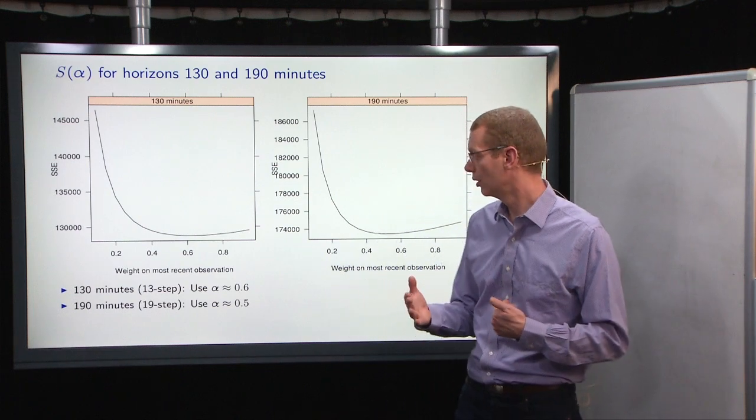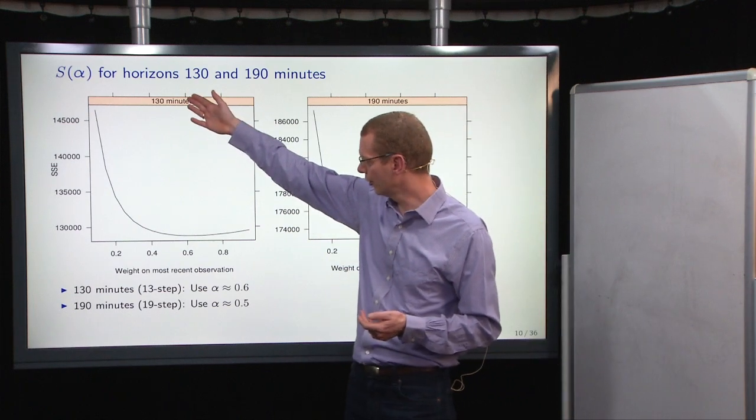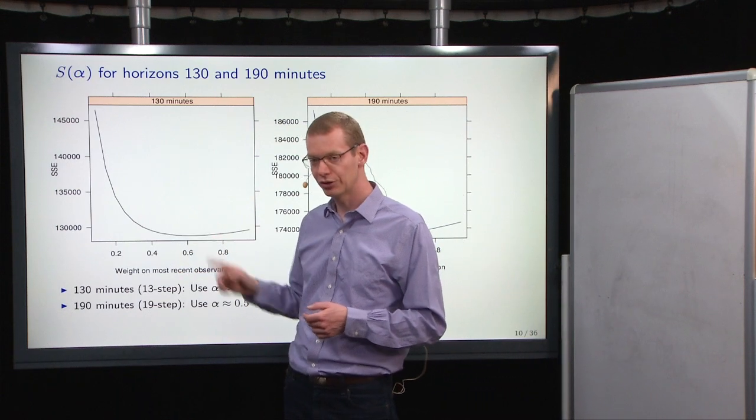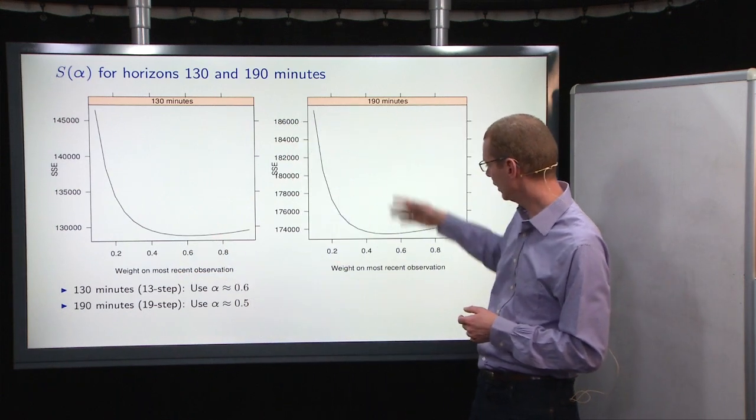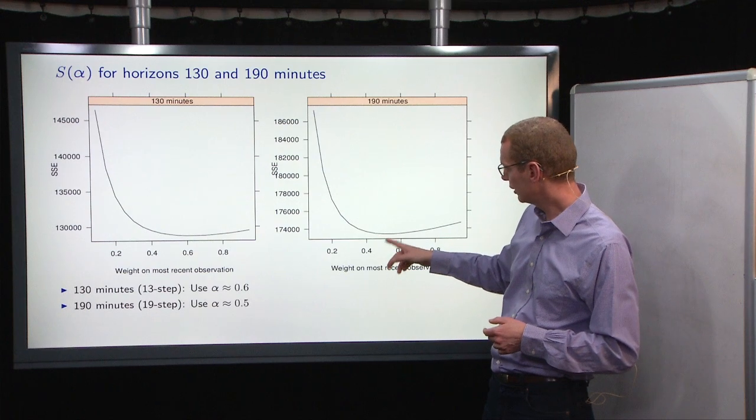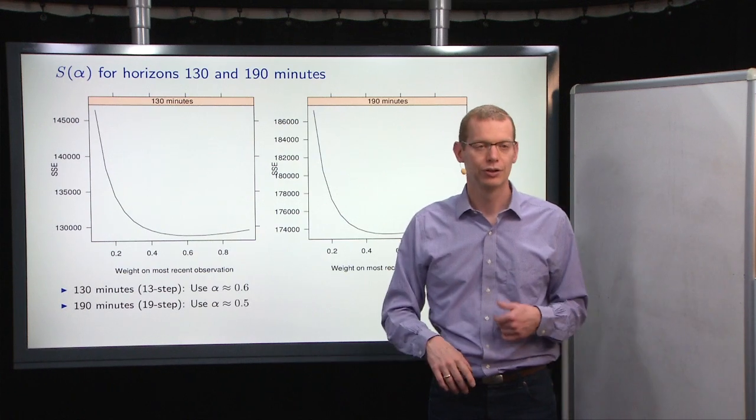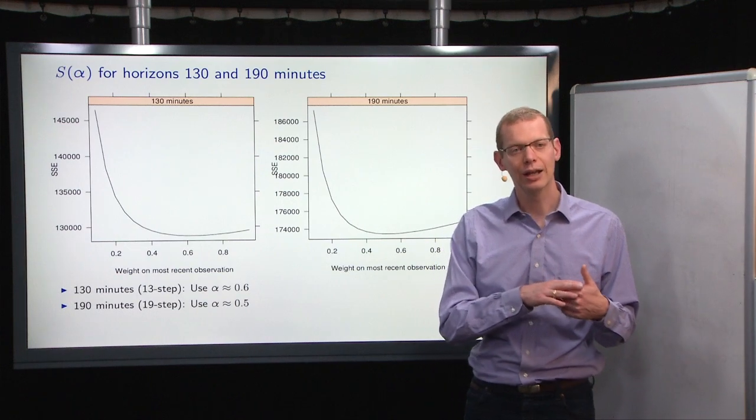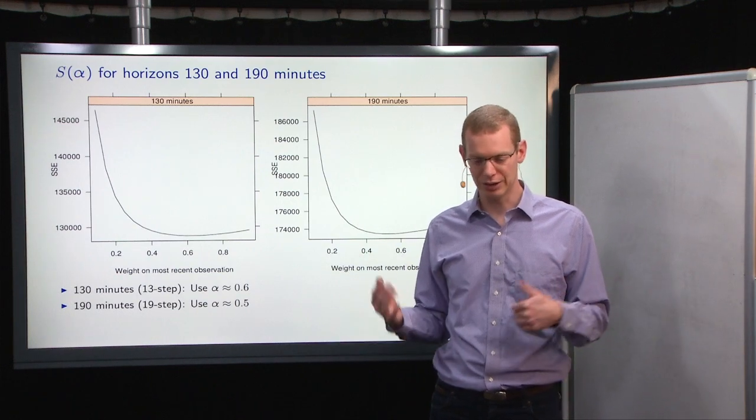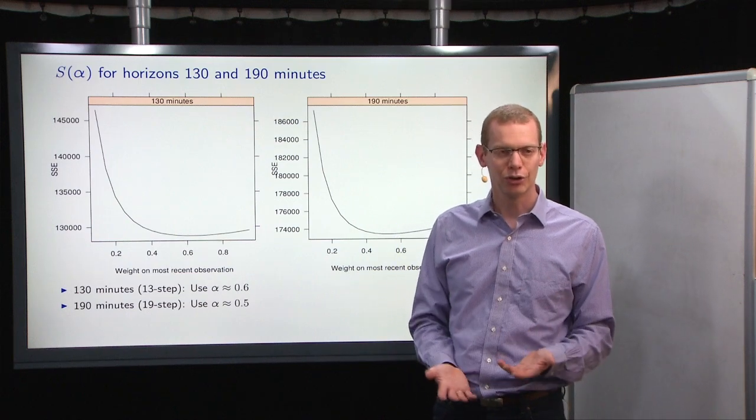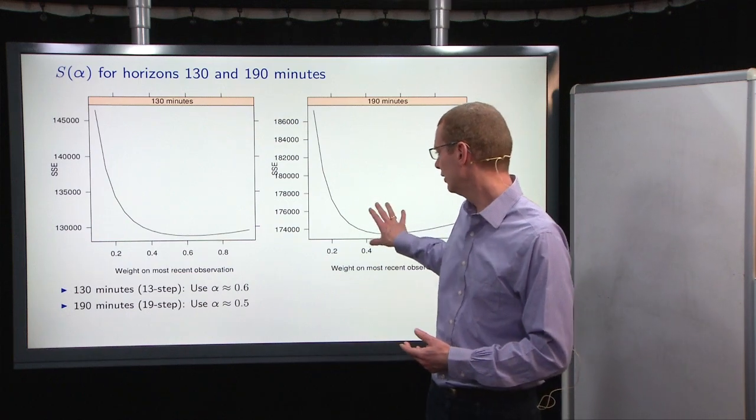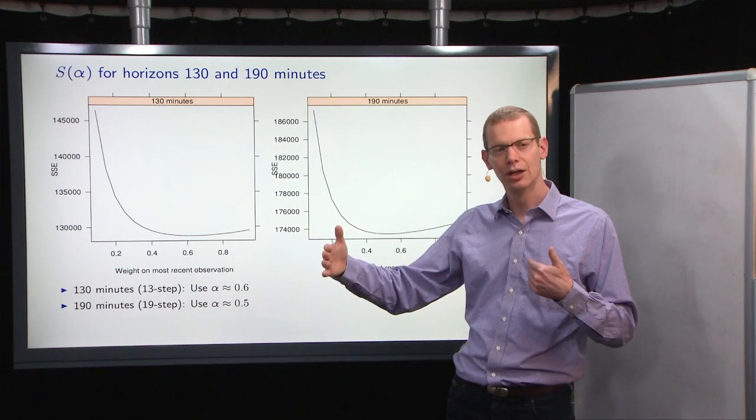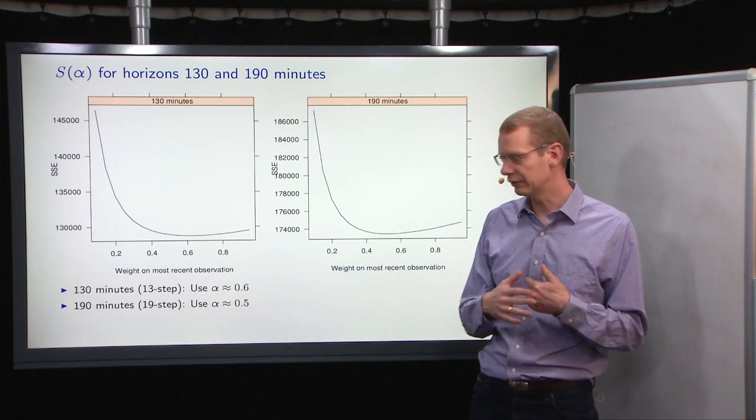If we go even further out, what we see when we go into 130 minutes is that we should use something close to 0.6, and if we go out for the 3 hours, then we are down to using 0.5. So that means half the weight on the most recent observation, and half the weight on the previous estimate. This is what you should expect to find: the longer horizon that you look at, the more memory you want to have in the system.